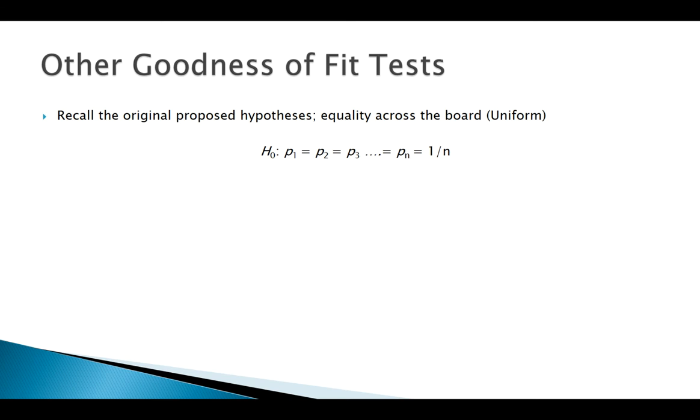That's one way to do it, essentially proposing a uniform distribution for the data, equality across the board. But we can also test if we have specific values for each group's proportion that we're interested in.